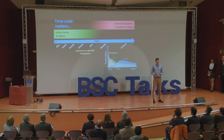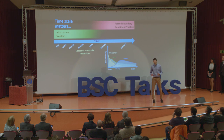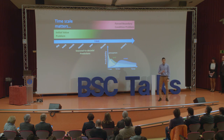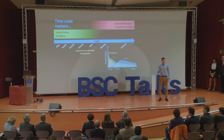Between weather forecasting and climate projections, we have what we call seasonal to decadal predictions, which are a mixture of initial and boundary condition problems. This figure here is a schematic representation of the role of three components of the climate system as sources of predictability — as sources of information for predicting the future climate.